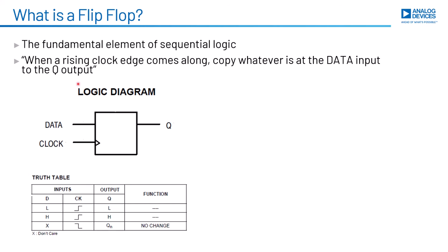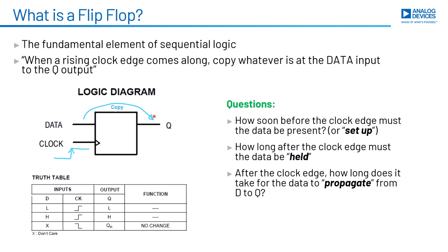Basically, when a rising clock edge comes along, it copies whatever is at the data input over to the output. As we go through this, we're going to ask ourselves these questions: How soon before that clock edge does the data have to be present or set up? How long after the clock edge does the data need to be held? And then after the clock edge, how long does it take for the data to propagate from the data input to the Q output?